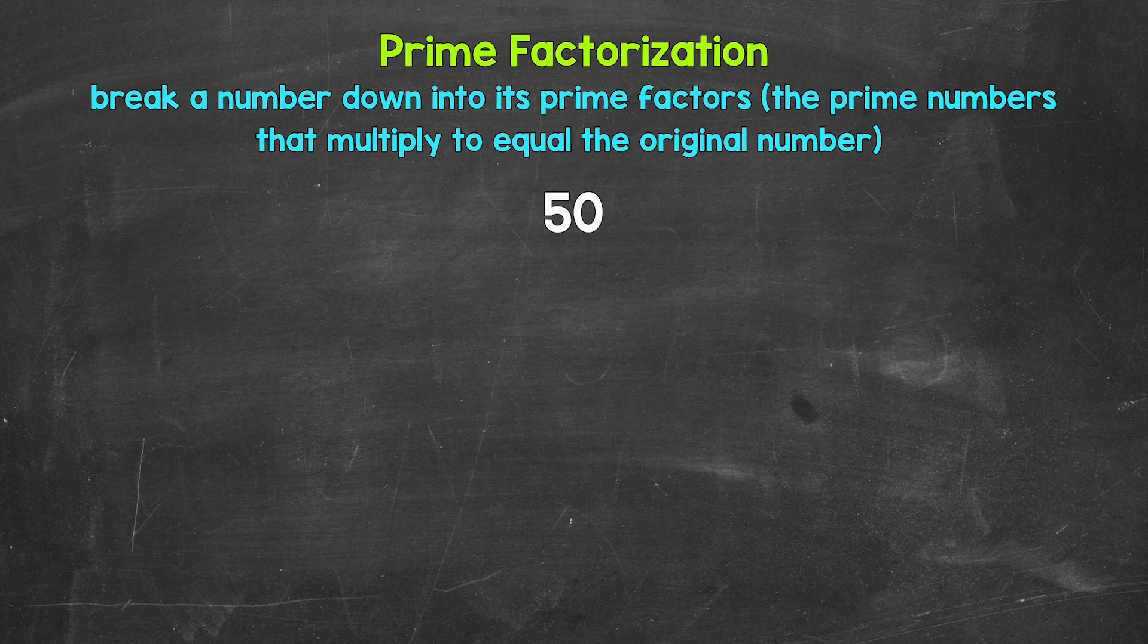So as far as 50 here, we need to start breaking this down by thinking of two factors, two numbers that multiply to give us 50. Well, 2 and 25 are factors of 50. 2 times 25 is 50. So let's break 50 down into 2 and 25.